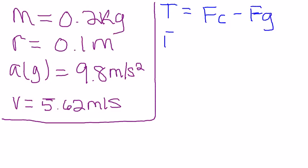Tension is what we're finding, so we're going to leave that as it is. But we're going to set these two to their equations. We know that Fc is equal to mass velocity squared over r, and Fg is equal to mass times gravity.